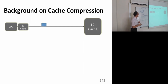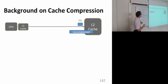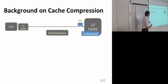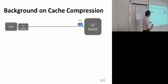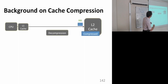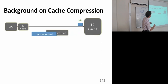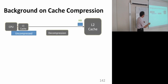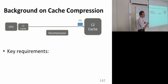A little bit of background. In an uncompressed cache, you get a cache hit and the latency is quick because there's nothing else sitting in between. Whereas in a compressed cache, you need to decompress the cache block on a cache hit, and that makes it slow. This decompression latency is critical to performance because the L2 cache is on the critical path of execution.